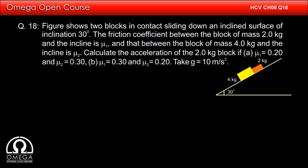The figure shows two blocks in contact sliding down an incline with inclination 30 degrees. The friction coefficient between the block of mass 2 kg and the incline is mu1, and that between the block of mass 4 kg and the incline is mu2. Calculate the acceleration of the 2 kg block if (a) mu1 = 0.2 and mu2 = 0.3, and (b) mu1 = 0.3 and mu2 = 0.2.